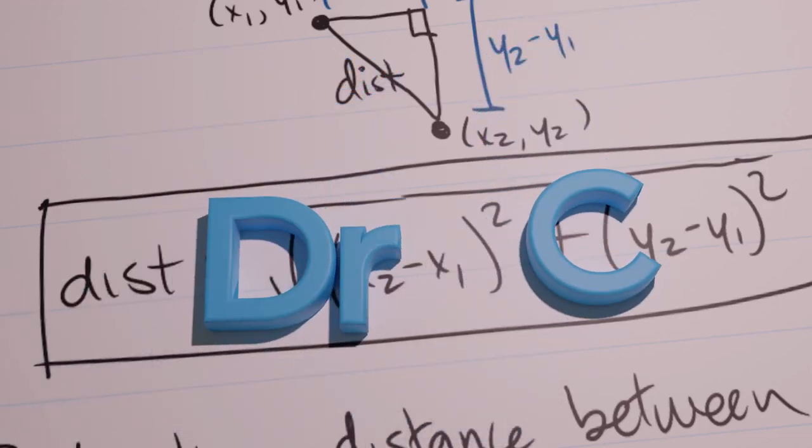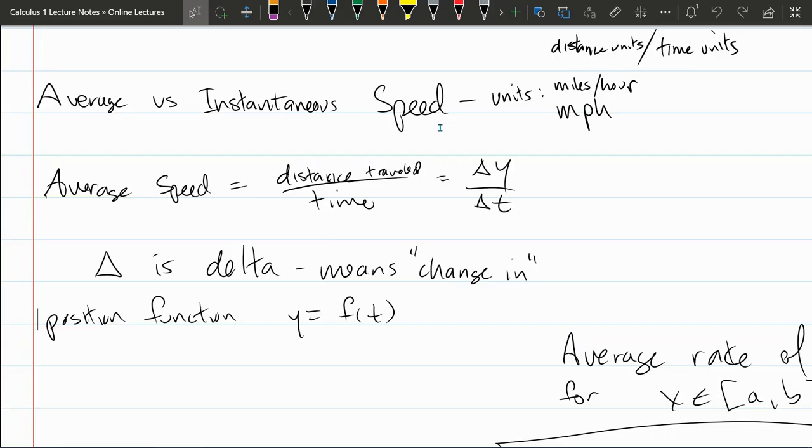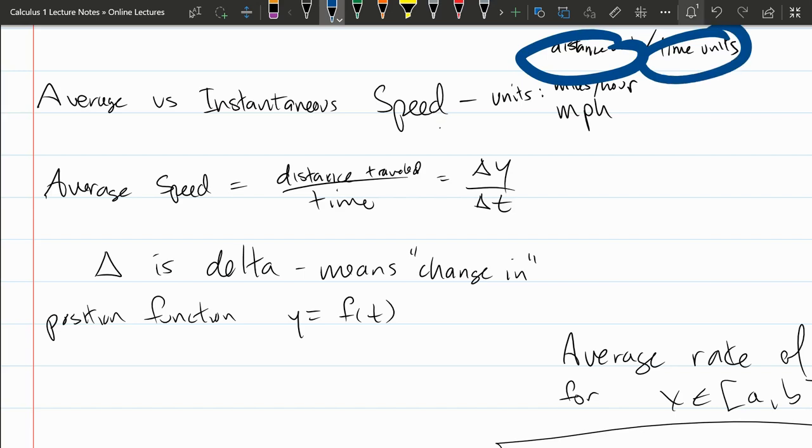The first topic we're going to get into in calculus is speed, or average versus instantaneous speed. Usually we think about that in miles per hour, of course it might be kilometers per hour depending on where you are. Just think about that as distance units divided by time units.